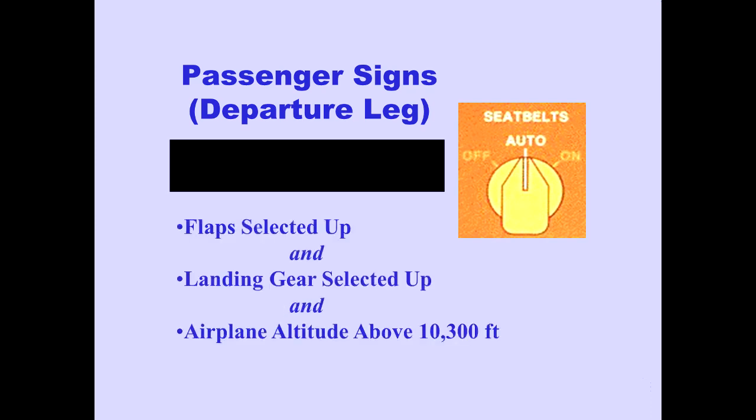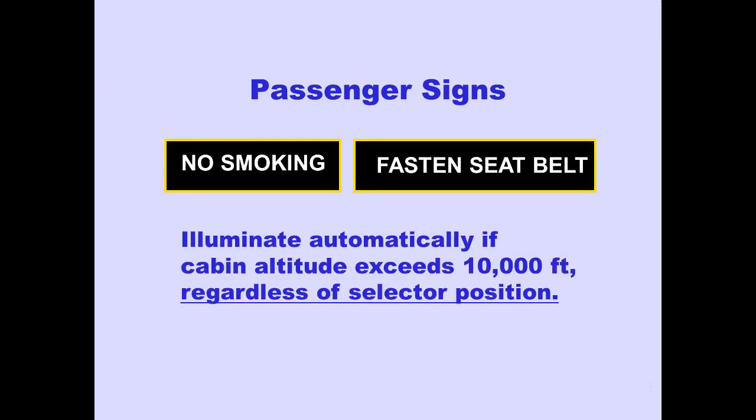With the fasten seat belt sign selector in auto, the fasten seat belt signs automatically extinguish during climb out when the flaps and gear are selected up and airplane altitude is above 10,300 feet. The no smoking and fasten seat belt signs illuminate automatically when cabin altitude exceeds 10,000 feet, regardless of selector position.